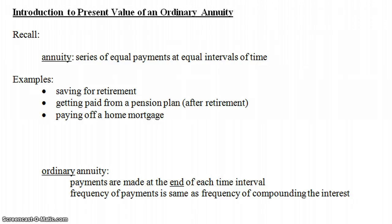Also, we want the frequency of payments to be the same as the frequency of the compounding of the interest. That means if you're putting money in every month, the interest should compound monthly. You don't want to put money in monthly while the interest compounds weekly or semi-annually, because the computations get much harder. This is why it's called an ordinary annuity — the computations, while a little tedious, are not nearly as bad.